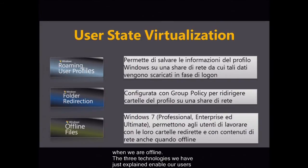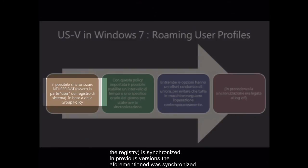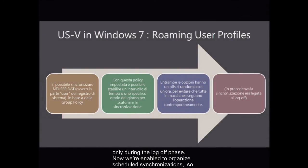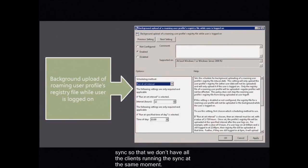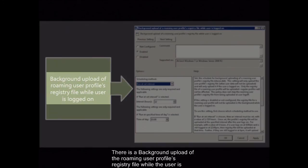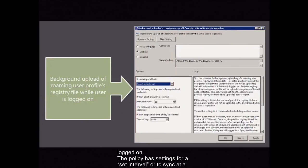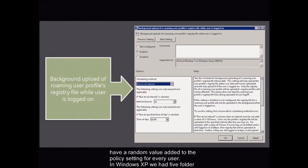The three technologies we've just explained enable our users to work in an efficient manner. Windows 7 changes the way the NTUser.dat — the user part of the registry — is synchronized. In previous versions, it was synchronized only during the log off phase. Now we're enabled to organize scheduled synchronizations so that an error, such as an incorrect log off process, doesn't damage the integrity of the profile. There is a group policy regarding the offset of the sync so that we don't have all the clients running the sync at the same moment. There is a background upload of the roaming user profiles registry file while the user is logged on, with settings for a set interval or to sync at a specified time of day. To avoid having all users syncing at the same time, a random value is added to the policy setting for every user.